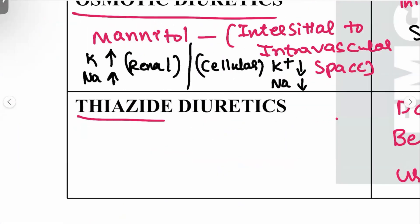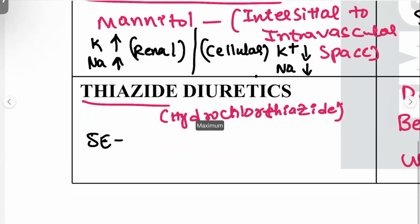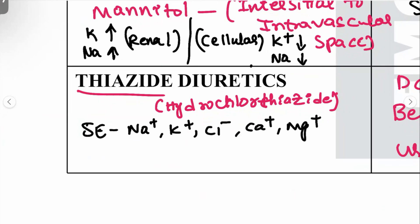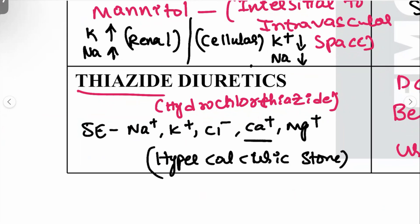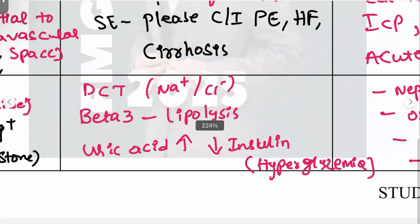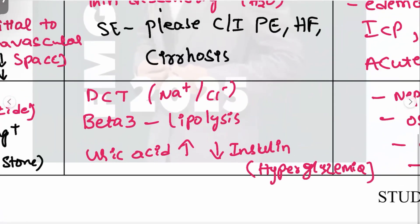Side effects of thiazide diuretics are similar to loop diuretics — loss of sodium, potassium, calcium, and magnesium. However, thiazides can be given as treatment for hypercalciuric kidney stones. Other side effects include lipolysis, hyperuricemia, hyperglycemia, and metabolic alkalosis.